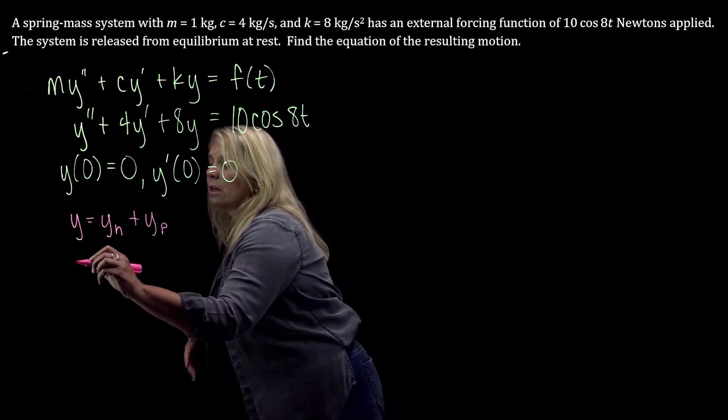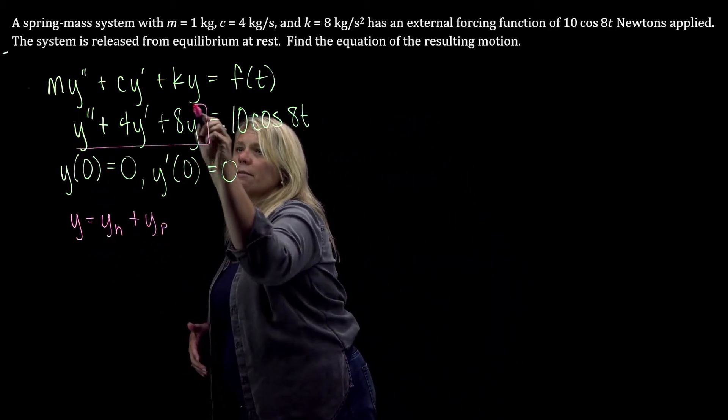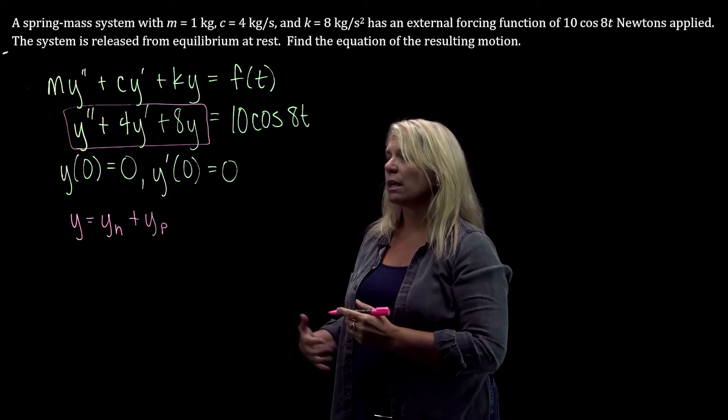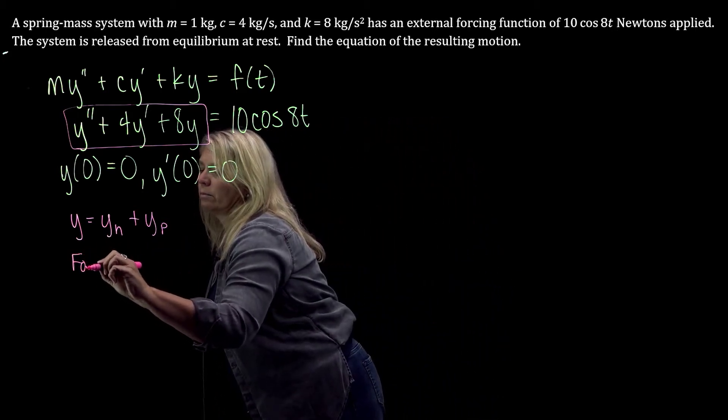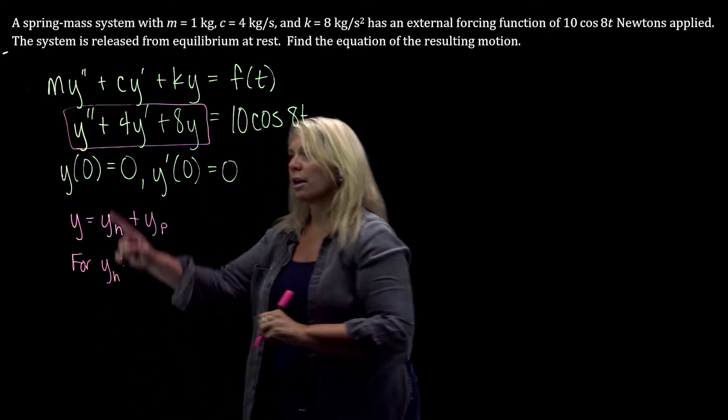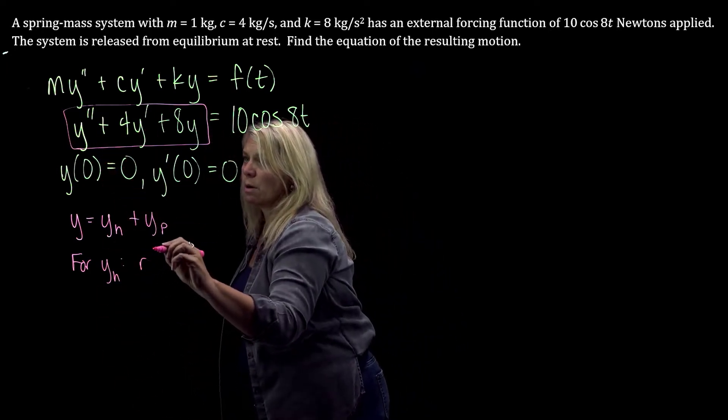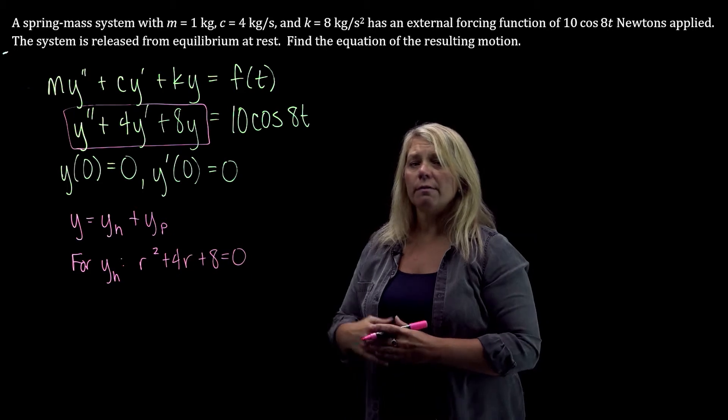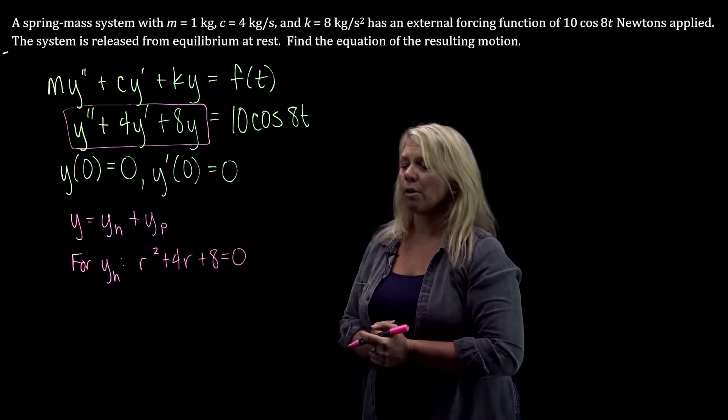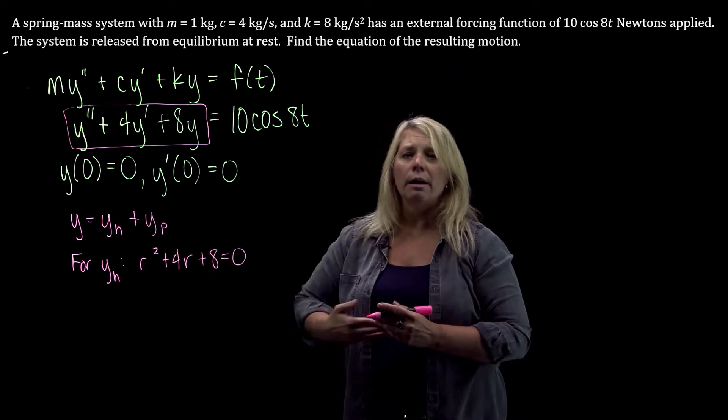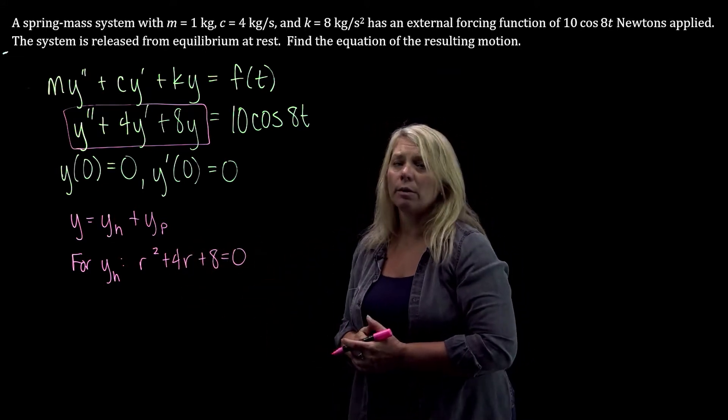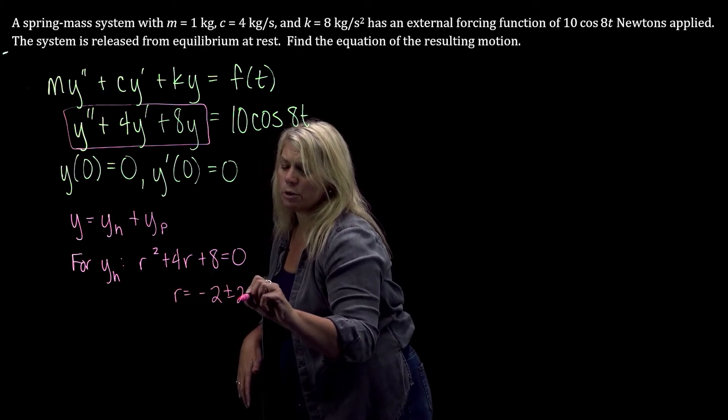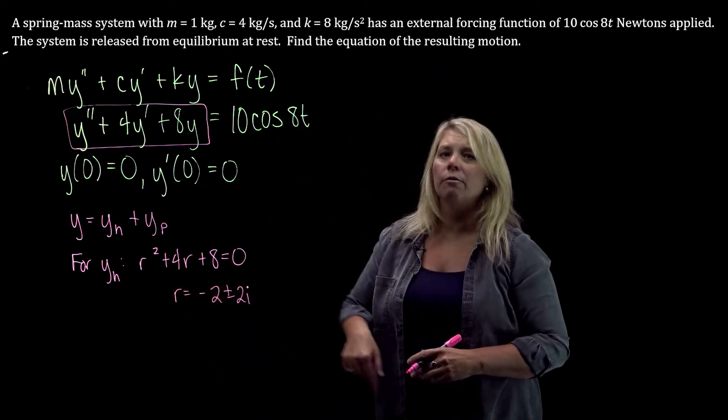To find the homogeneous solution, we know that we're going to be solving as if this equation were equal to 0. You're going to use a characteristic polynomial. So your characteristic polynomial would be 1 times r squared plus 4r plus 8 equals 0. And then depending on the roots of this characteristic polynomial, that tells you the form of your yh. So probably use quadratic formula. You should get r equals negative 2 plus or minus 2i when you use quadratic formula to solve that.